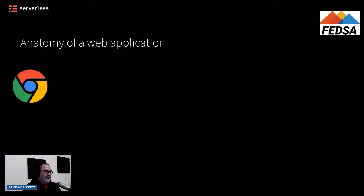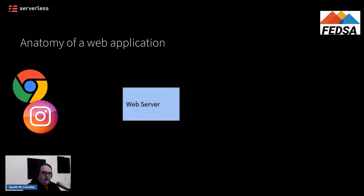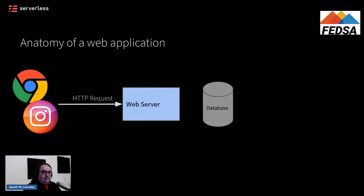Looking at what makes up a web application, you've obviously got the front-end side of things — you've got clients making requests, whether they're browsers or applications, to a web server in the back-end. There's going to have to be some web server somewhere to process requests. That web server is going to want to chat to a database of some kind. You need to store data somewhere, and then responses go back to the clients that made the initial requests. That's the very basic three tiers of a web application.